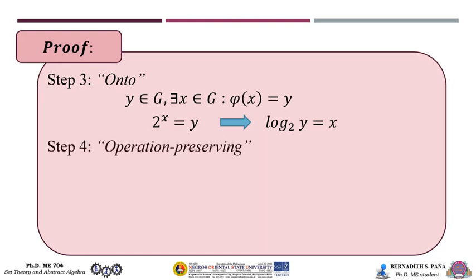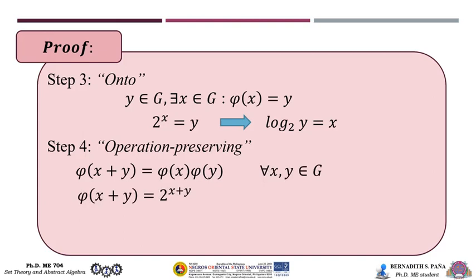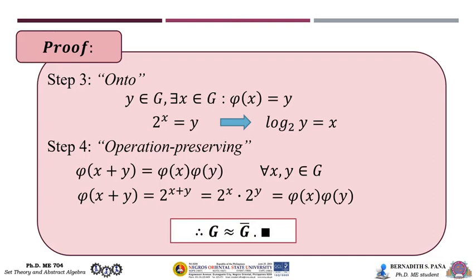For the last step, we show it is operation preserving. We look at φ(x + y) = φ(x) · φ(y) for all x, y in G. We have φ(x + y) = 2^(x+y) = 2^x · 2^y = φ(x) · φ(y). Thus it is operation preserving. Therefore, we have proved that G is isomorphic to Ḡ.